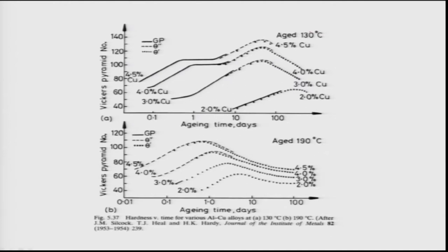The bottom figure shows the same but with aging done at a higher temperature of about 190 degrees Celsius. Looking at the top curve for the 2 weight percent copper alloy — a lean alloy — aging at 130 degrees Celsius requires about 10 days just to start precipitation.